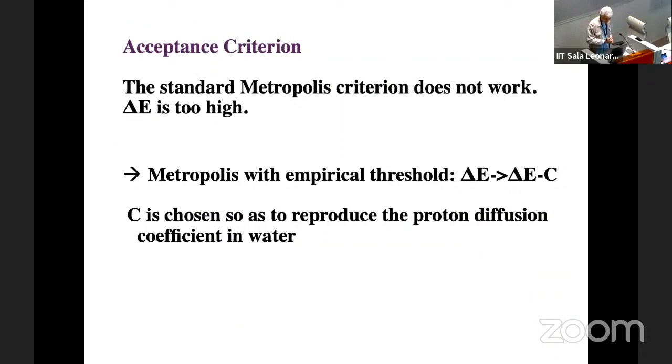The acceptance criterion: ideally we would like to use Metropolis Monte Carlo, but the problem is that the changes in energy that we calculate when a proton hops are too high, 20 to 30 kilocalories per mole. In that case, a proton hop would never be accepted. So we use Metropolis with an empirical threshold. We say if the energy is above a certain threshold, then we accept, otherwise we reject. We adjust this threshold to reproduce the proton diffusion coefficient in water.